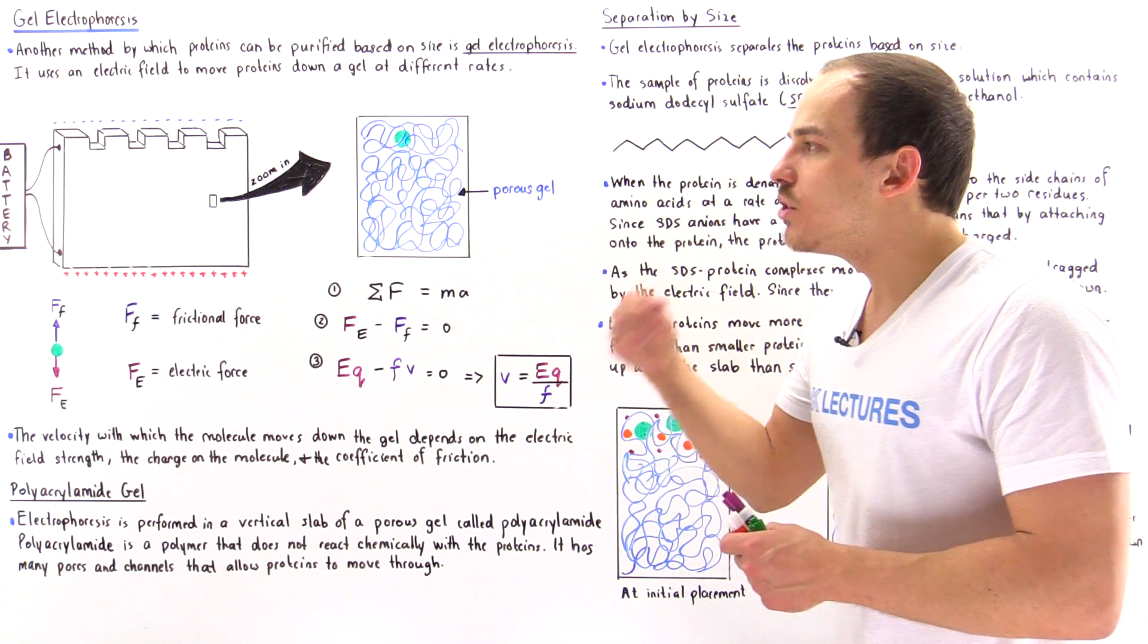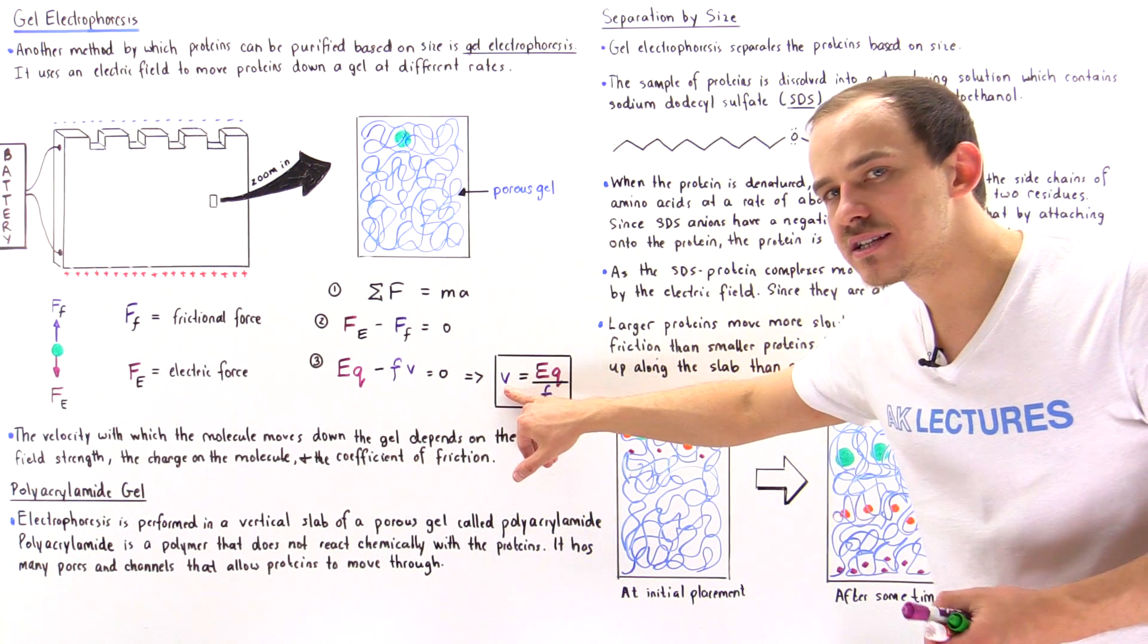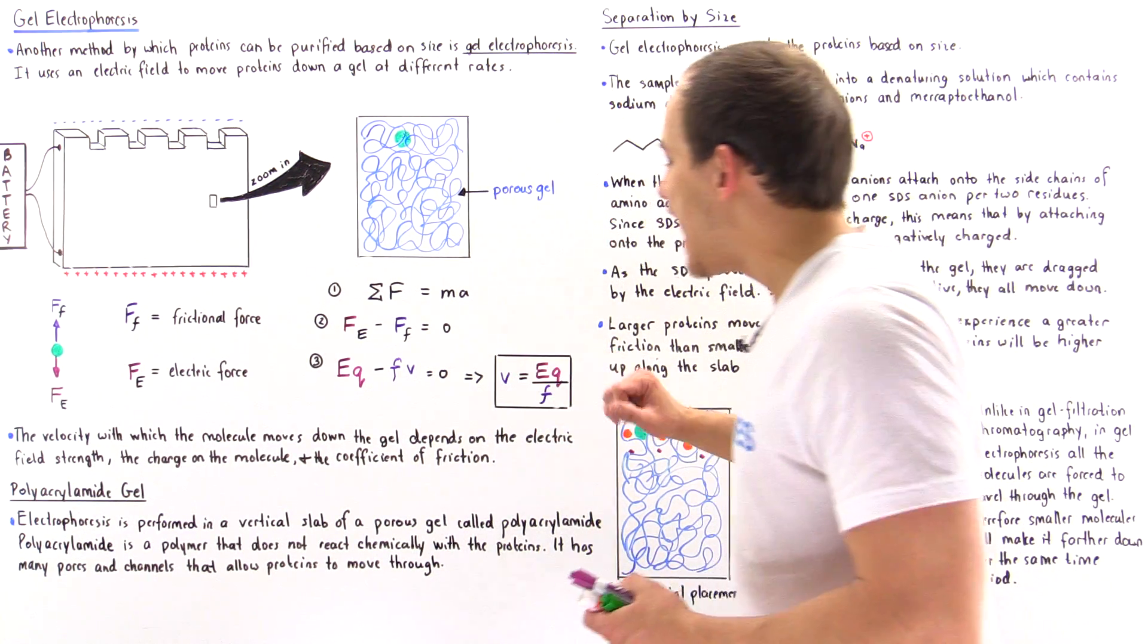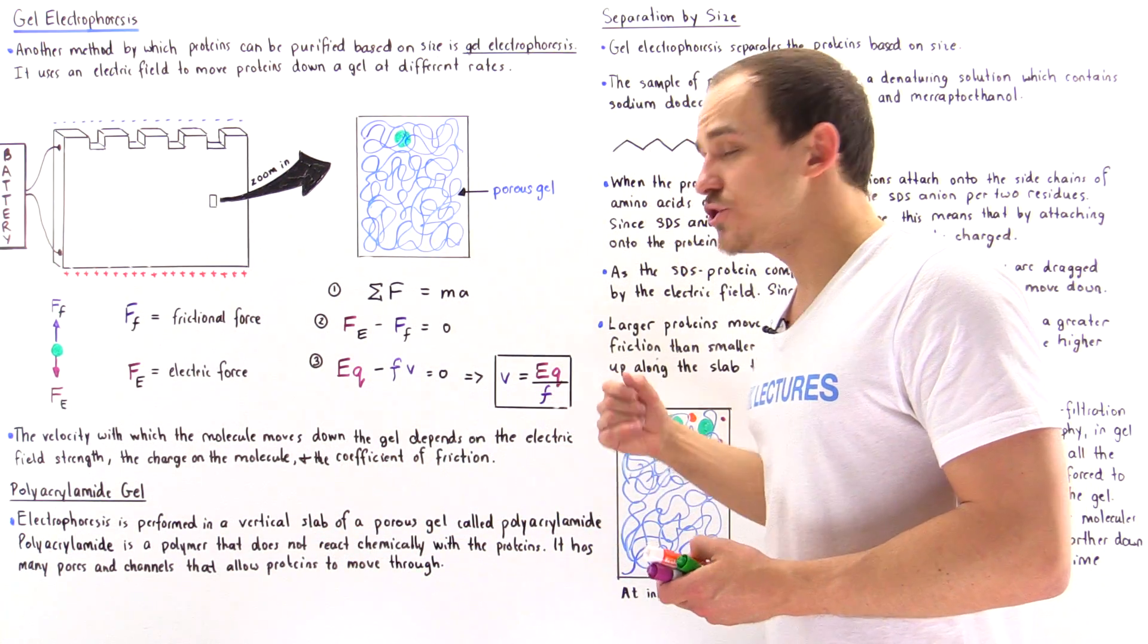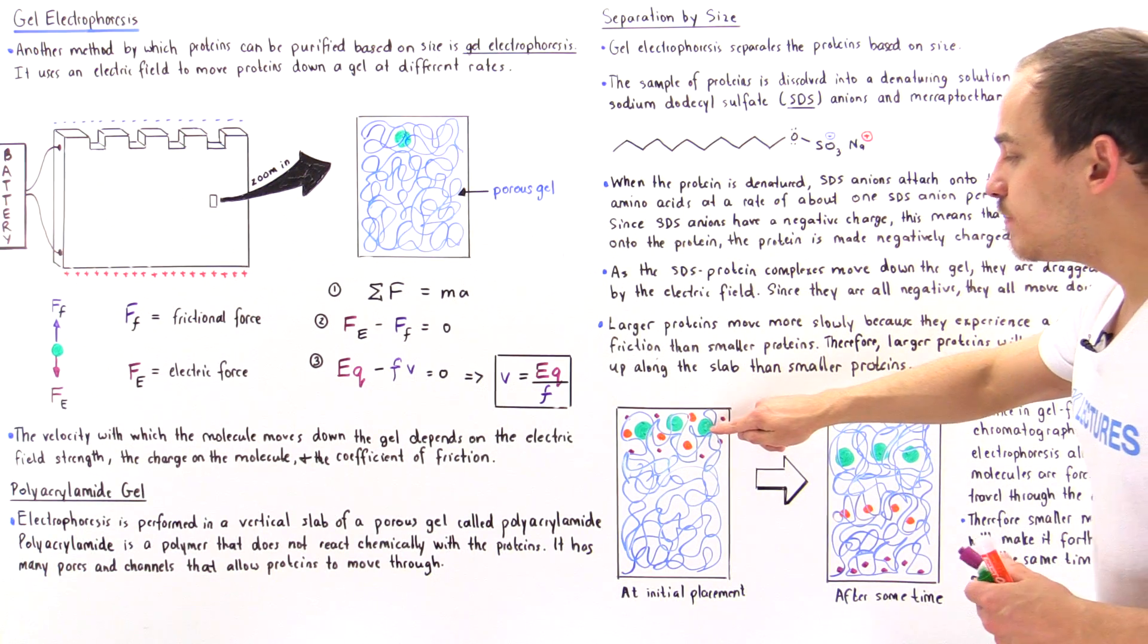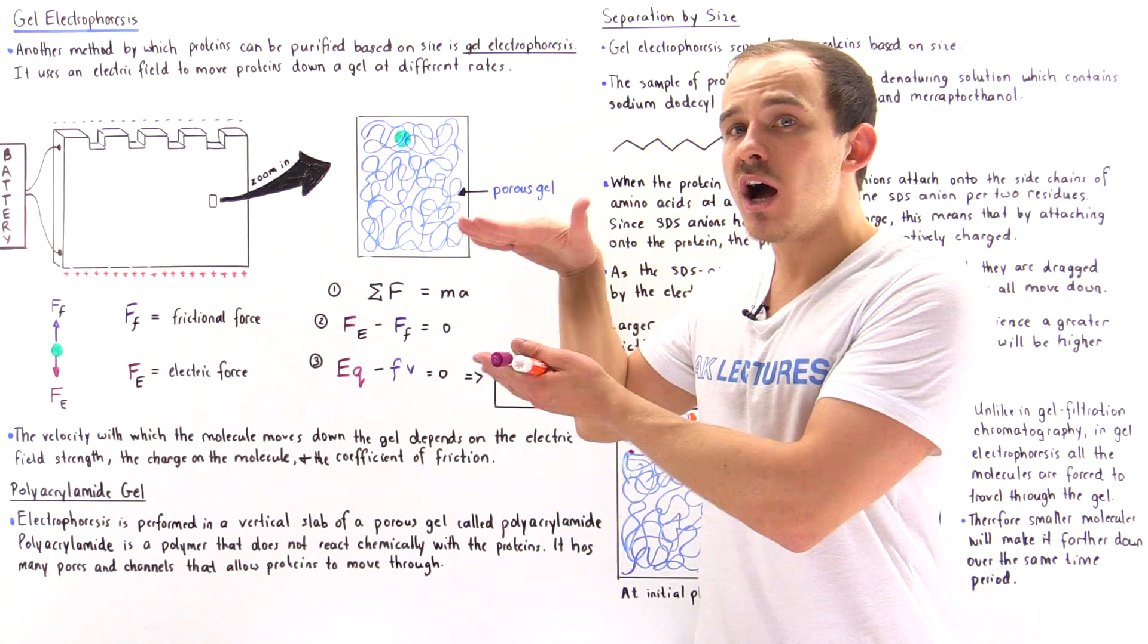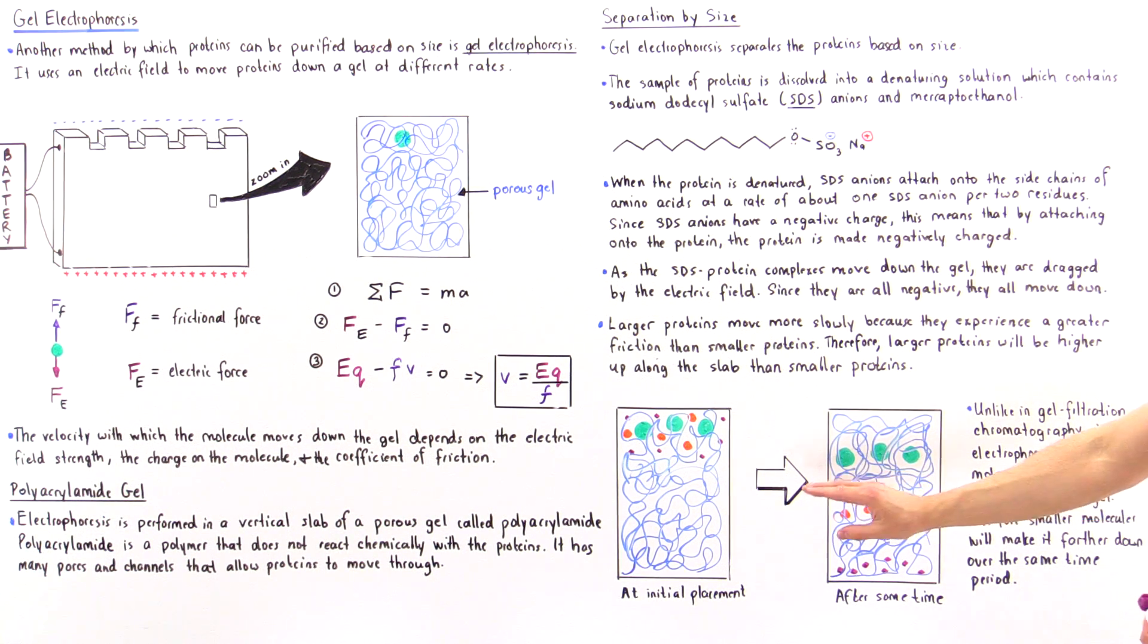Because those large proteins will have a smaller velocity, smaller rate of movement as a result of the increase in the drag force and the coefficient F, what that means is these green proteins will be found higher up as compared to our intermediate orange proteins which will be somewhere in the middle.